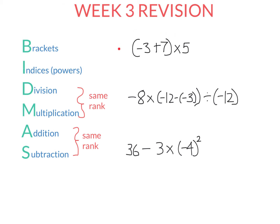Let's look at this first problem. It has two operations: addition and multiplication. This is not a subtraction sign, it's just a negative sign. Normally we would perform multiplication first, but because the addition is in the brackets, we perform it first. So we have negative 3 plus 7, which is positive 4, and we multiply that by 5 to get an answer of 20.